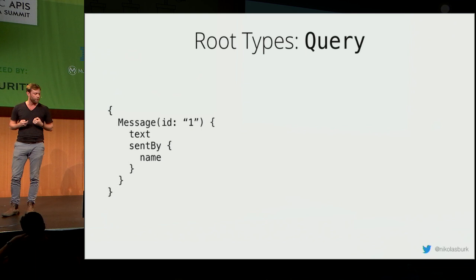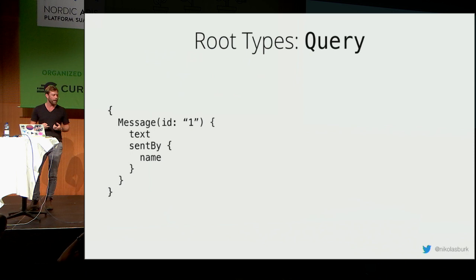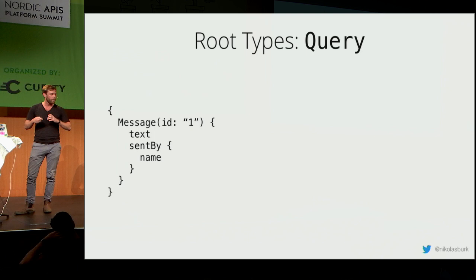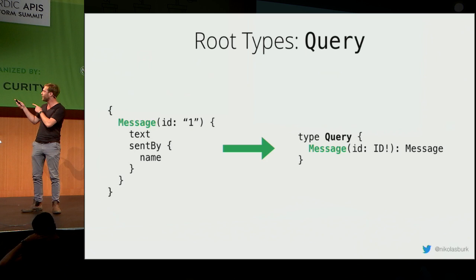Now let's talk about root types and their special role in the GraphQL schema. When we want to send a query to ask for one particular message from the API, we have to define the query type and put a field called 'message' on it — this allows us to send that particular query to the API.